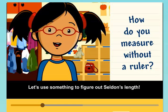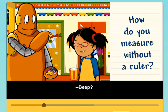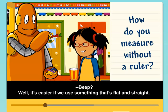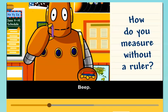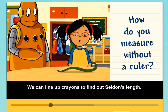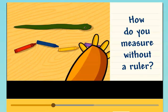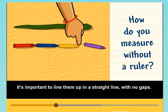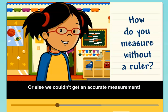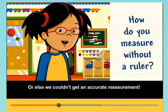Let's use something to figure out Seldon's length. Well, it's easier if we use something that's flat and straight. We can line up crayons to find out Seldon's length. It's important to line them up in a straight line with no gaps, or else we couldn't get an accurate measurement.